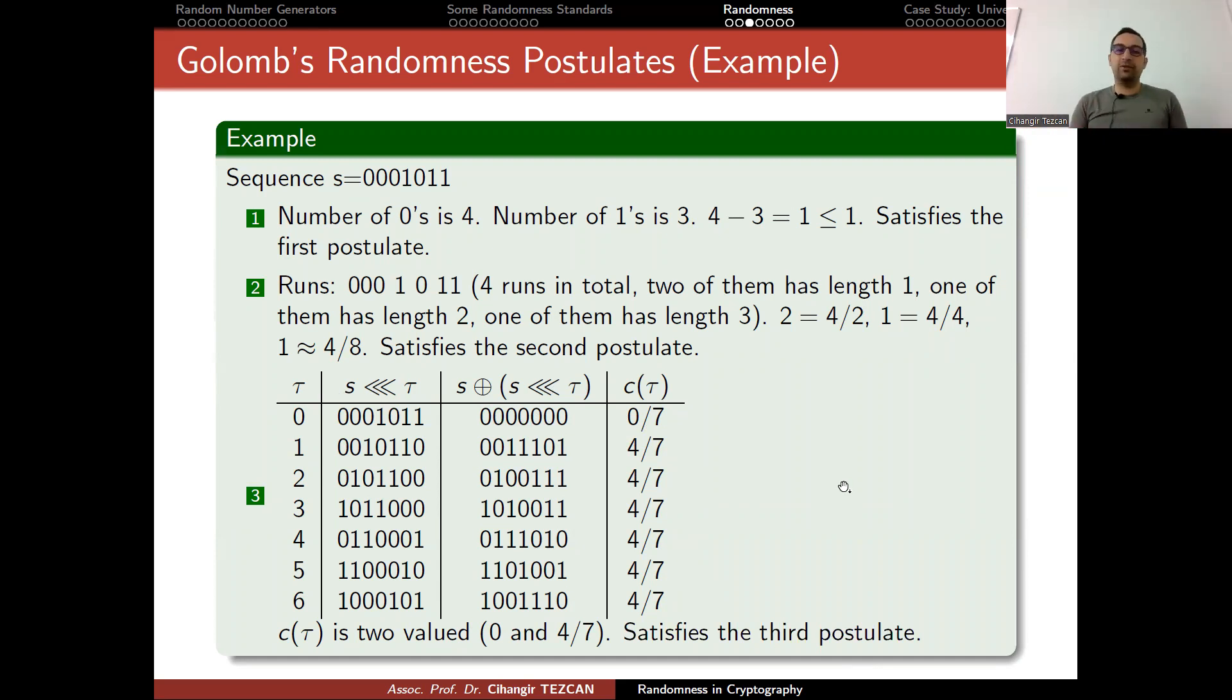Of course, you have to have zero here, because you are XORing the sequence with itself. But this is why we said that a random value should have autocorrelation of two values. Here we have two values, zeros and four over sevens. So if we had three over seven here, then it wouldn't satisfy the third postulate. So these are the definitions to satisfy a random sequence should satisfy these properties. We have finite length sequences, and we want to check if it satisfies this postulate. So if it doesn't satisfy, we will say that it doesn't look random.